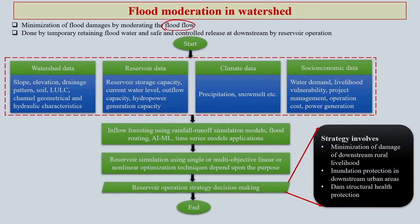How does this process take place? Suppose you have a flood situation. In the watershed you will have data — it could be in the cloud or in the server. The watershed has certain information about slope, elevation, drainage, land use, and hydraulic characteristics. You also have reservoir information: storage capacity, current water level, outflow capacity, and hydropower generation capacity.